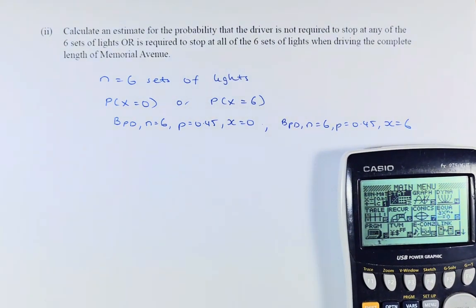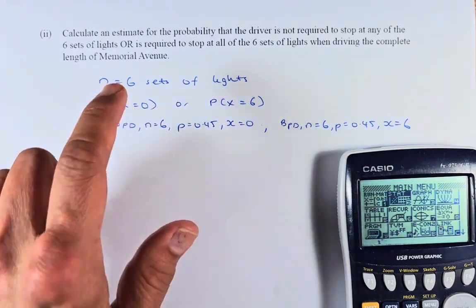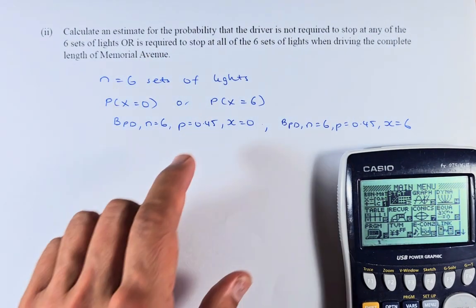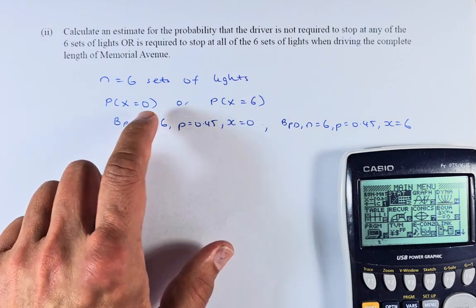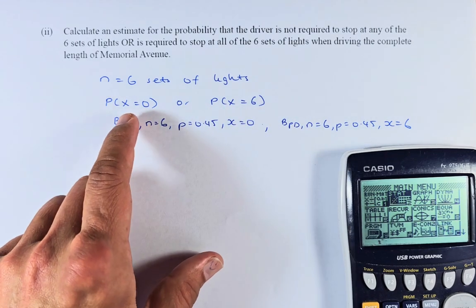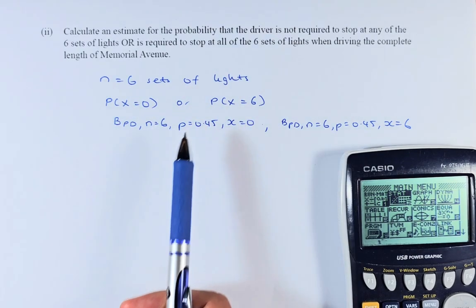So the question is, calculate the estimate of the probability that the driver is not required to stop at any of the 6 red lights. So not required means x equal to 0 or required to stop at all 6, so that time, probability x must be equal to 6. So it's either 0 or 6. So we need to calculate the probability when x equal to 0 and x equal to 6.